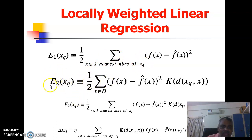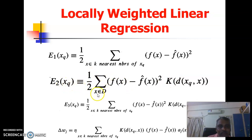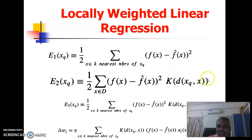Another concept is to use all the training examples but apply a discounting function — a function of the distance. That gives E2(x_q) = (1/2) * sum over x in D of [f(x) - f-cap(x)]^2 * K(d(x_q, x)), where K is some function of the distance between the query point and the training examples. In this case we use all the examples but weight them by distance.